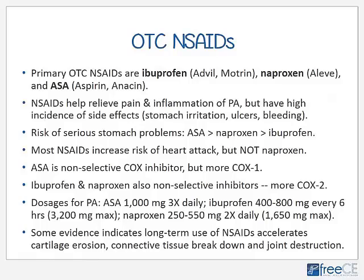Effective over-the-counter thick moisturizers include Neutrogena Norwegian Formula Cream, Eucerin, and Aquaphor, among others. Covering psoriasis lesions with saran wrap or plastic wrap is actually quite helpful, especially when using a topical treatment, as it tends to seal it in and prevent evaporation. The primary over-the-counter NSAIDs for PA are ibuprofen (brand names Advil, Motrin), naproxen (Aleve), and ASA (aspirin or Anacin). NSAIDs help relieve the pain and inflammation of PA and other arthritic conditions but have a fairly high incidence of side effects, mainly related to the stomach.